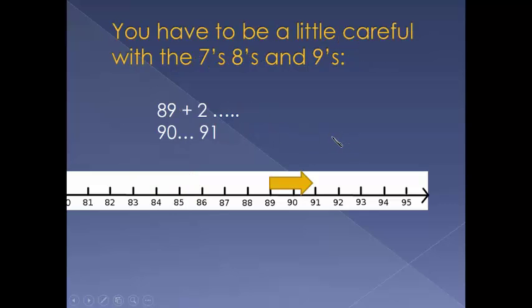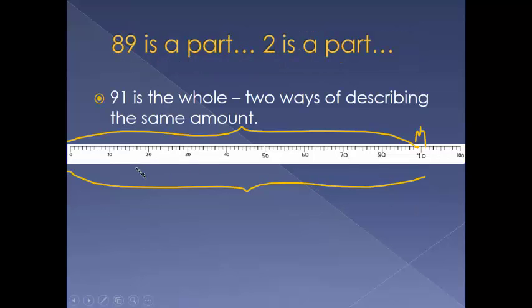You have to be a little careful with numbers that end in 7, 8, or 9. 89 plus 2 is 90, 91. 91 is the whole. 89 is a part. 2 is a part.